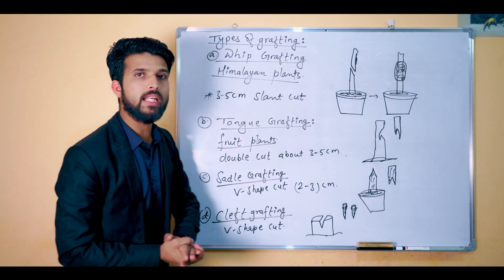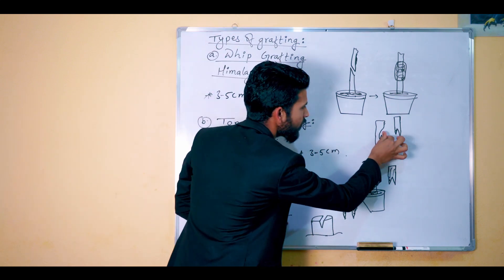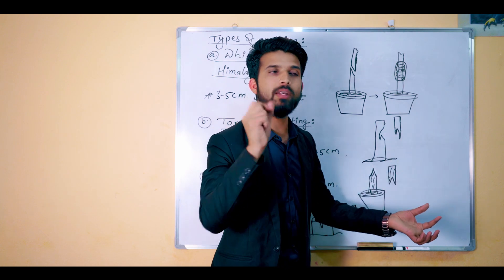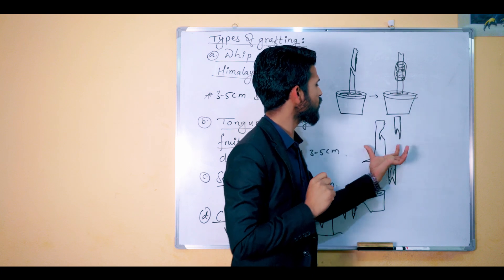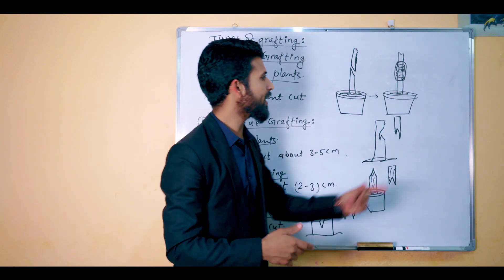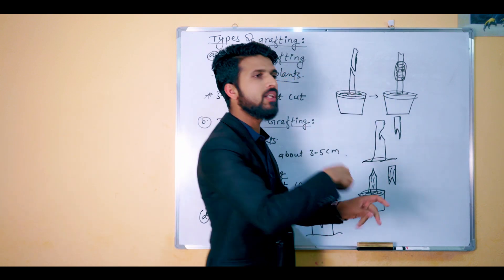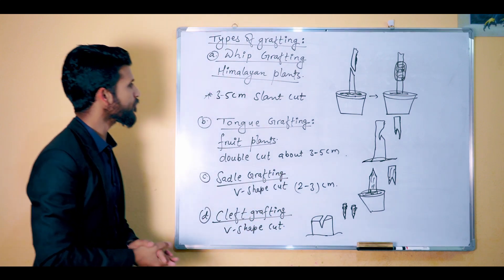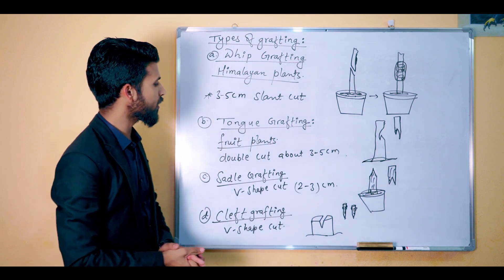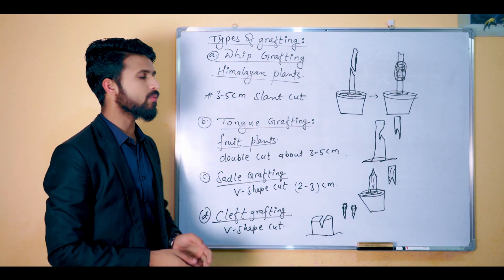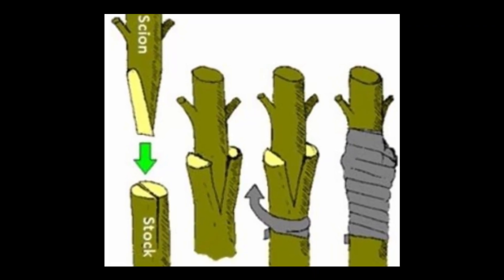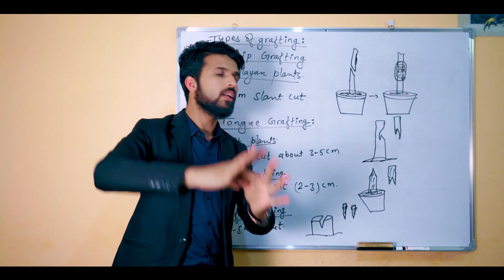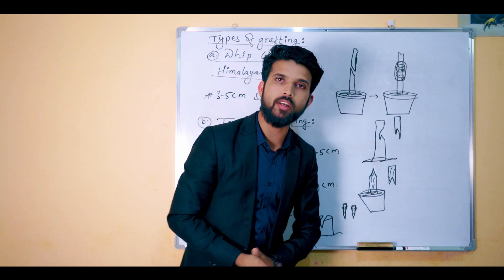This is tongue grafting. In saddle grafting, we make a double cut of 3 to 5 cm. We have to cut a V-shape. This is the same process: we cover the graft with grafting powder after making the V-shape cut.